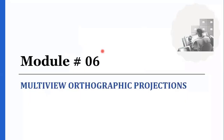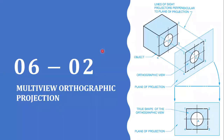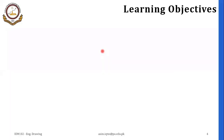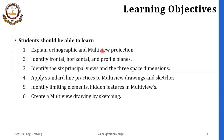We are still discussing module number six: multi-view orthographic projections. In this lecture, I am telling you in detail about multi-view orthographic projection. At the end of this lecture, you would be able to explain orthographic and multi-view projections, identify the frontal, horizontal and profile planes, identify the six principal views and three space dimensions, apply standard line practices to multi-view drawings and sketches, identify limiting elements and hidden features, and create multi-view drawings by sketching.